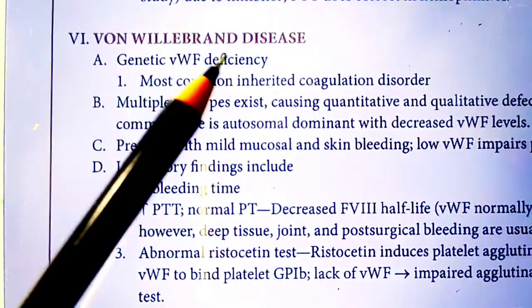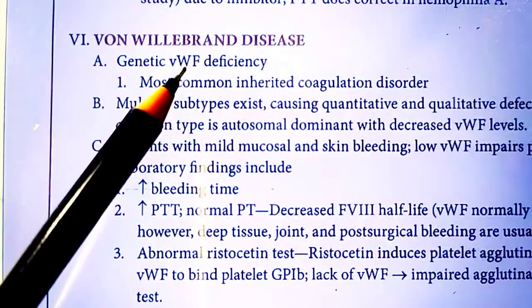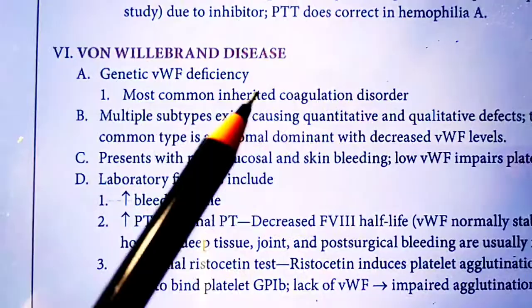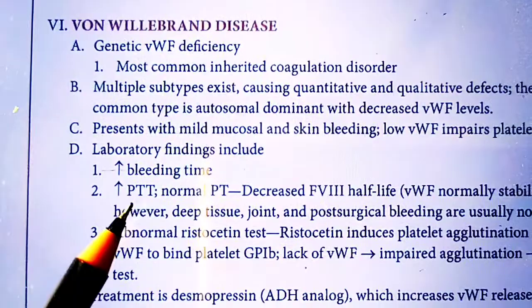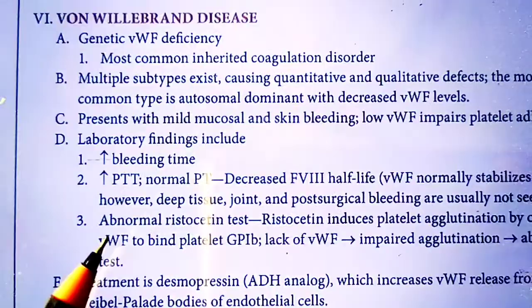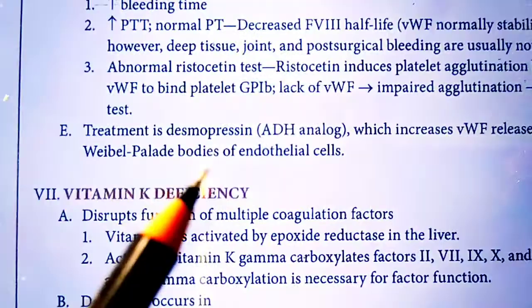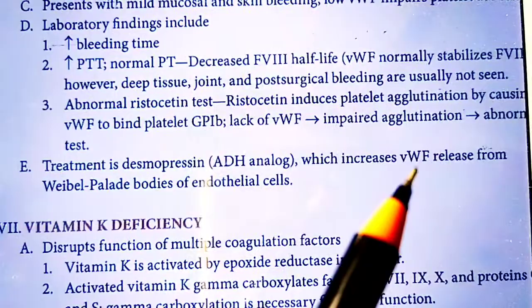Von Willebrand disease is due to deficiency of von Willebrand factor (vWF). It is the most common inherited coagulation disorder and is autosomal dominant. Laboratory findings include increased bleeding time, increased PTT, and decreased vWF. Treatment uses desmopressin, an ADH analog, which increases vWF release from Weibel-Palade bodies of endothelial cells.